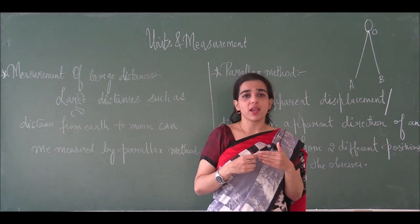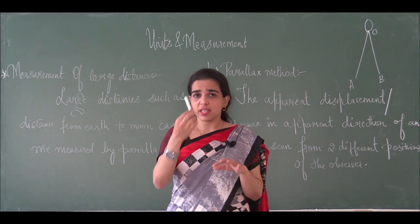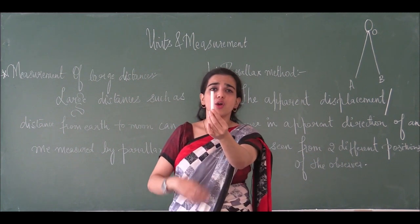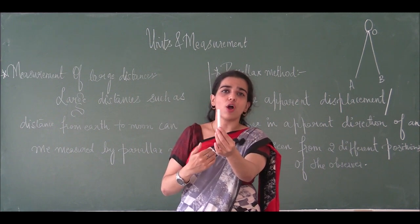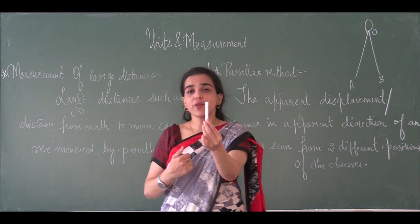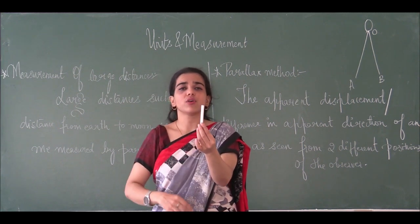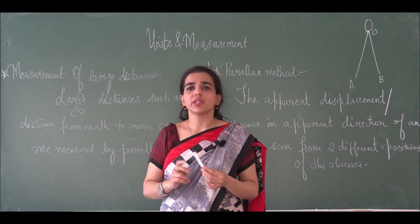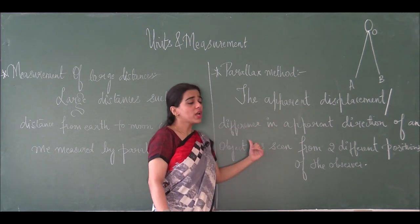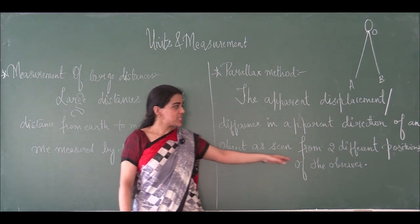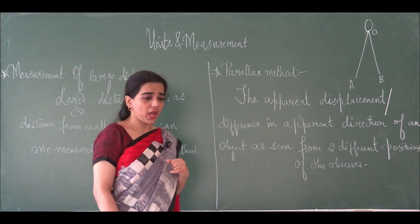To measure such large distances, we use a method called the parallax method. Imagine I am holding an object at the center. When I view this object from one position, its direction appears a certain way. When I view the same object from another position, the direction appears differently. This apparent displacement or difference in direction is what we call parallax. We define parallax as the apparent displacement or difference in the apparent direction of an object as seen from two different positions of the observer.